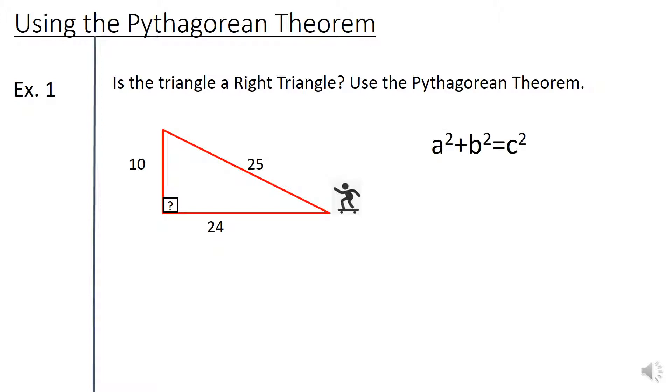Good old a squared plus b squared equals c squared that Pythagoras figured out for us thousands of years ago.